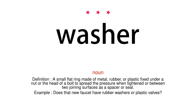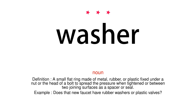Noun. Definition: A small flat ring made of metal, rubber, or plastic fixed under a nut or the head of a bolt to spread the pressure when tightened, or between two joining surfaces as a spacer or seal. Example: Does that new faucet have rubber washers or plastic valves?